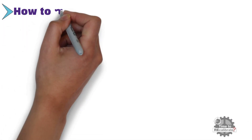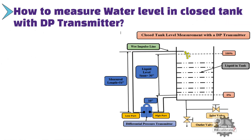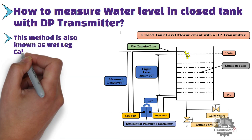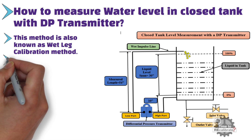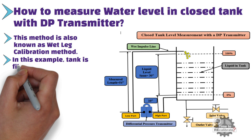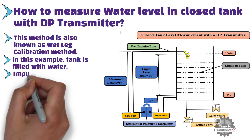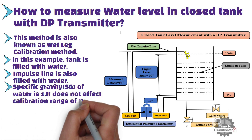How to measure water level in a closed tank with a Differential Pressure Transmitter? This method of level measurement is also known as the wet leg calibration method. The specific gravity of process fluids plays a crucial role in the calculation of the calibration range for a DP transmitter. In this example, let's assume the tank is filled with water and the impulse line is also filled with water. Since the specific gravity of water is 1, it does not affect the calibration range.